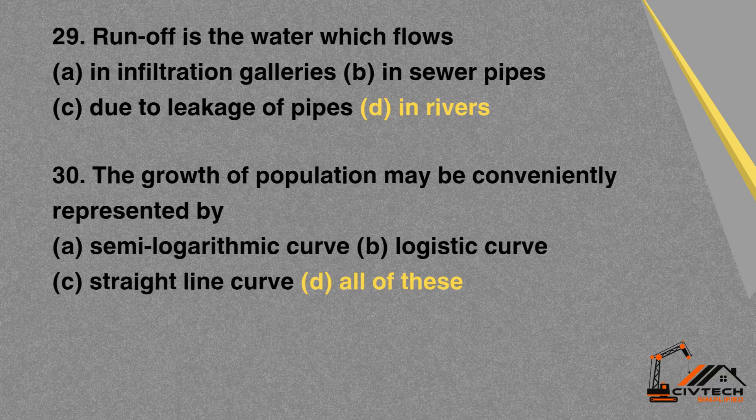MCQ 29: Runoff is the water which flows — A. In infiltration galleries. B. In sewer pipes. C. Due to leakage of pipes. D. In rivers. Correct option: D. In rivers.